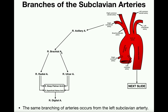The right brachial artery runs the entire length of the proximal arm until you reach the elbow — the antecubital region. There, the right brachial artery diverges into two major arteries: the right radial artery and the right ulnar artery. In anatomical position, the right radial artery is lateral and the right ulnar artery is medial, and both run down the length of the forearm — the antebrachial region.